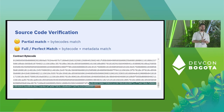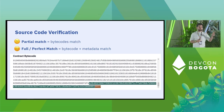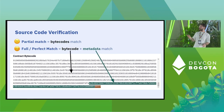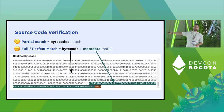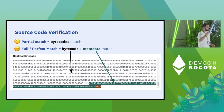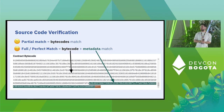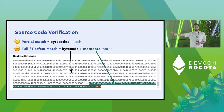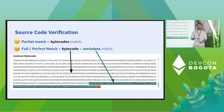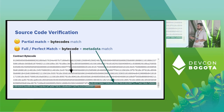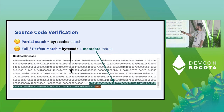In Sourcify we have two types of matches. We have the partial match when the bytecodes match, and we have the full match when both the bytecode and the metadata field match. Right now when you are verifying on Etherscan or any other verifier, they actually ignore this metadata field — they just trim it out. There have been cases where this was exploited. With the full match, you have a complete match of the bytecode.